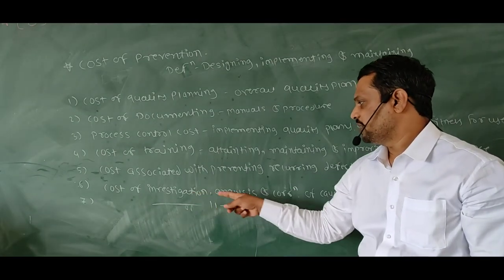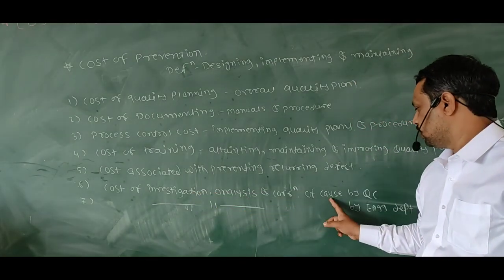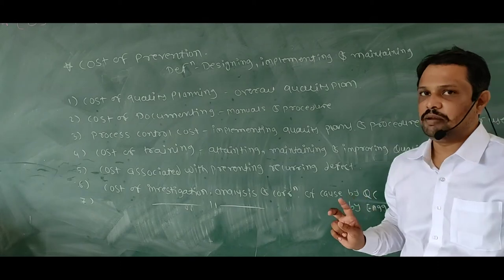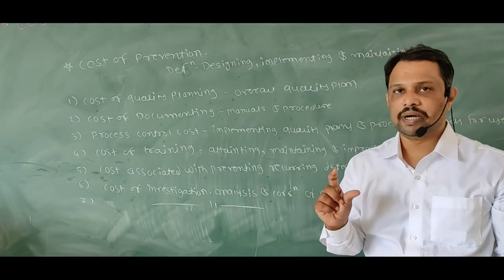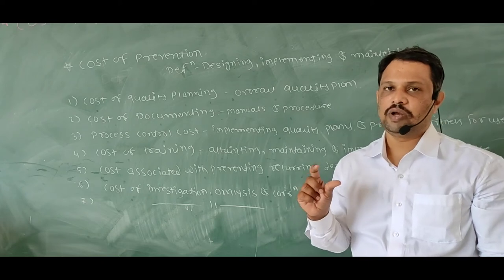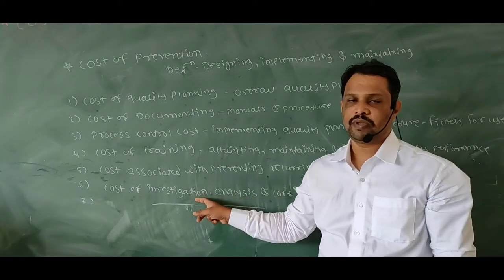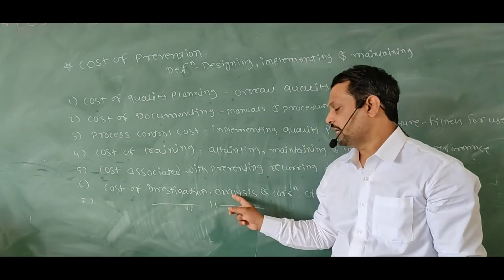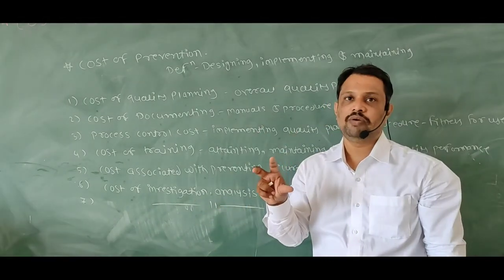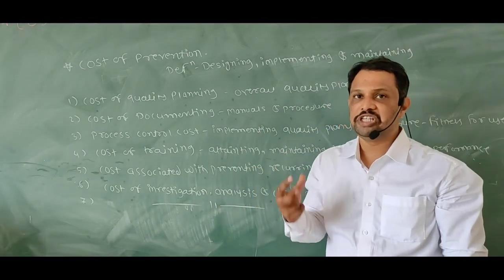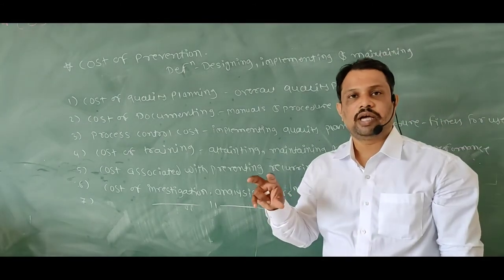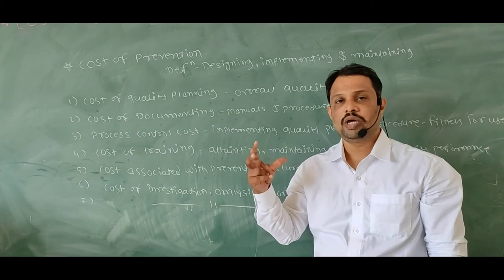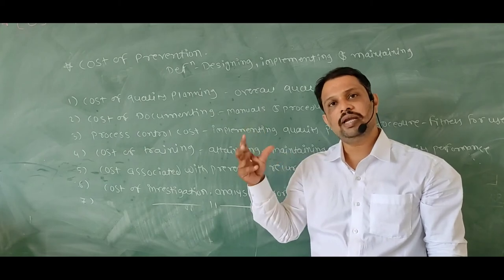After that, cost of investigation, analysis, and correction of cause by quality control department. Consider there is a major quality issue in your company. So quality department should investigate that issue. After that, do analysis on that - basically by which reason it happens - and take corrective action, meaning what key steps so it shouldn't happen in future.